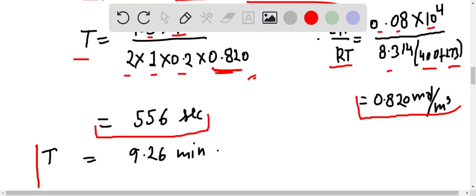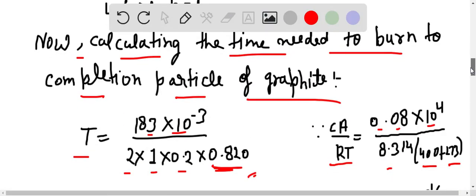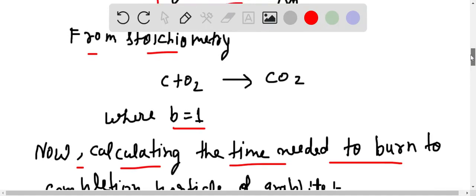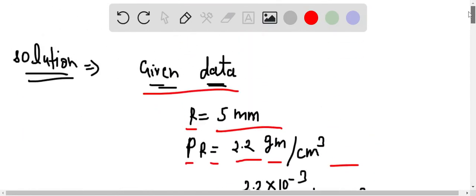And in minute we get the time is 9.26 minute. So the time needed to burn the completion particle of graphite is 9.26 minute. This is the solution of the answer. Please go through this, thank you.